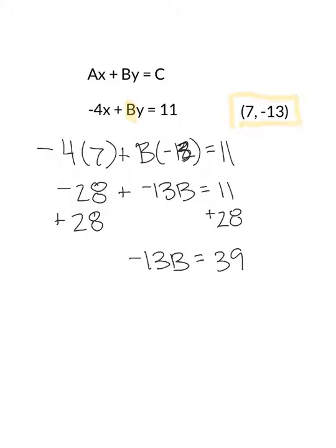And then to solve this, I do the opposite of multiply, which is divide. So I'm going to divide both sides by negative 13. So B equals negative 3.